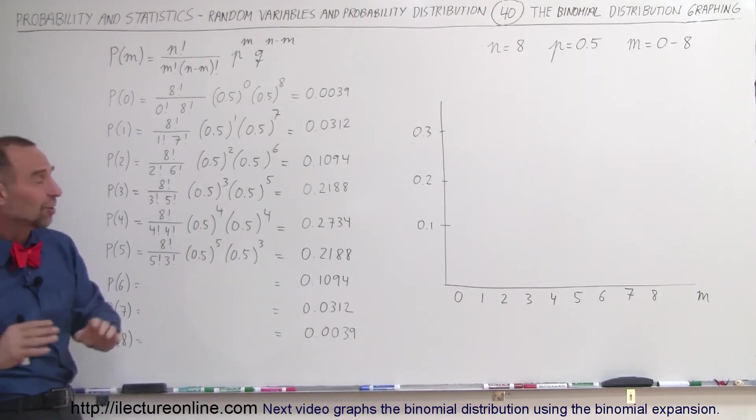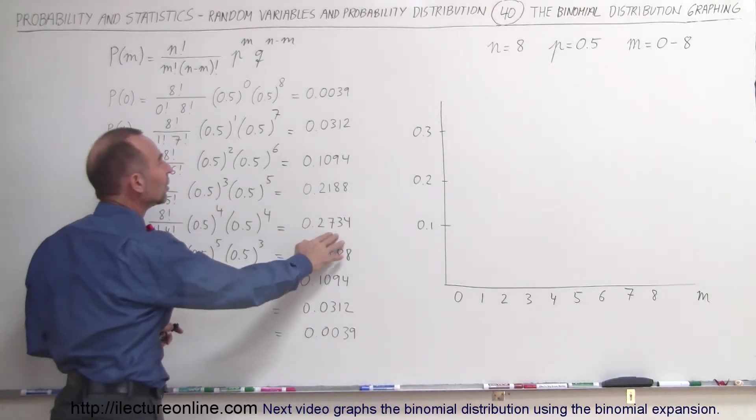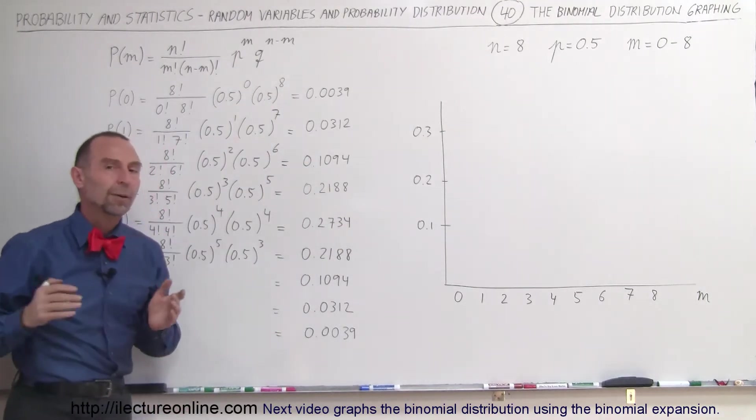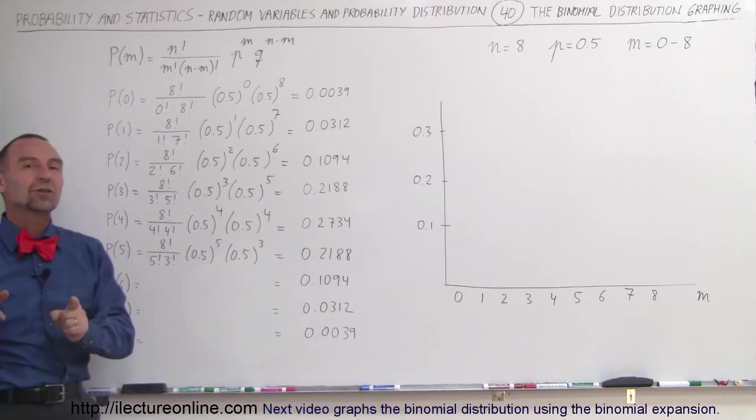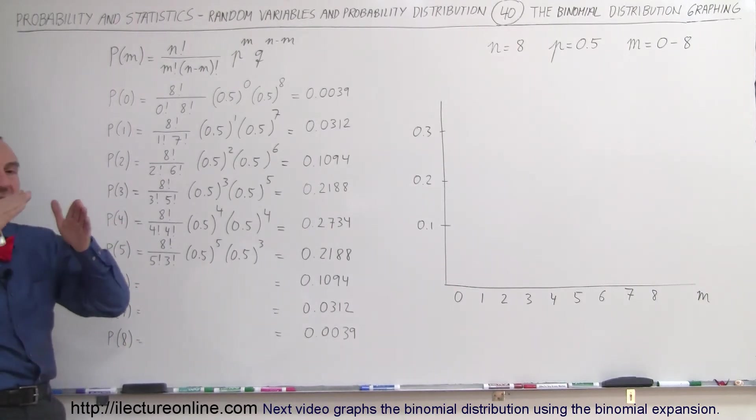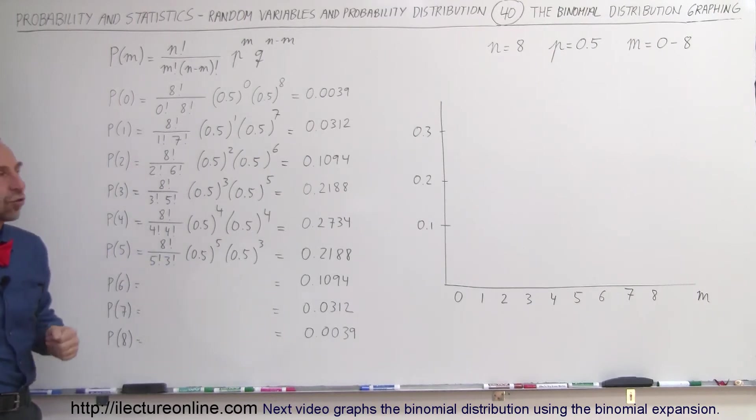The reason why there's this perfect symmetry on both sides of the maximum value is because both p and q have the same value. In other words, the probability of success and the probability of failure is equal to each other, 0.5 in each case. Therefore, you'll have a perfectly symmetric distribution for your binomial graph.